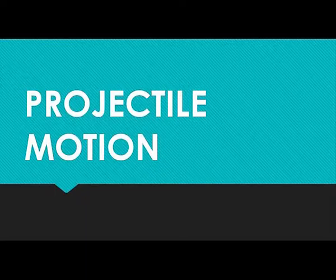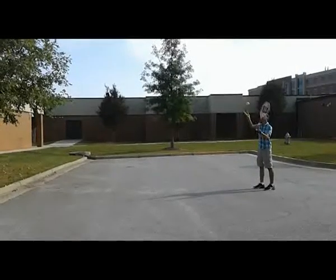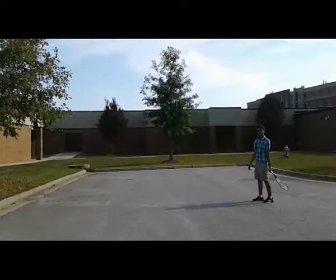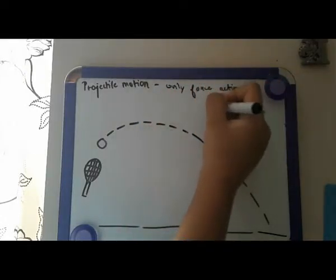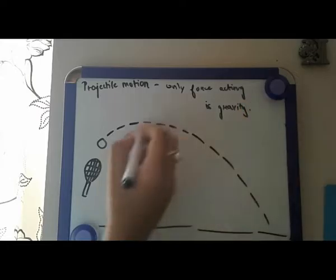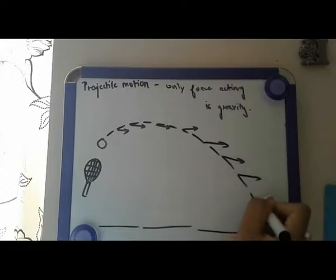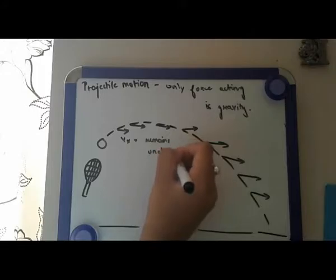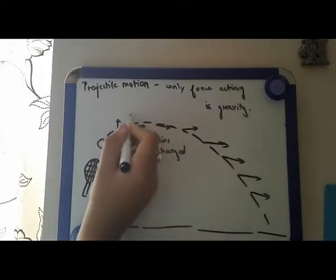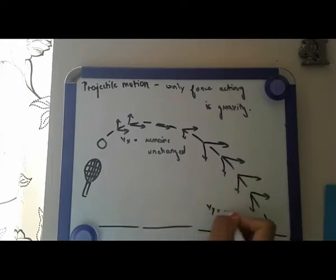Another aspect of physics comes into play while serving. When the ball accelerates due to the hit of the racket, it travels in projectile motion. A projectile is an object on which the only force acting is gravity. In projectile motion, the horizontal component and the vertical component are independent of each other — neither affects the other. The horizontal component of the velocity remains unchanged throughout the motion; however, the vertical component of the velocity increases because the acceleration due to gravity is constant.